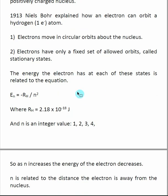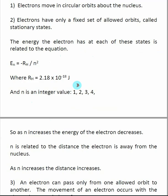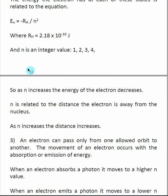Bohr was also able to calculate the energy of an electron in these states — at different distances from the nucleus. He came up with an equation where the energy of the electron is related to a constant R_H divided by n squared, where n is an integer value. This integer value n is very important, and we're going to spend a lot of time on it. It is related to the idea that electrons can only occupy these specific orbits around the nucleus.